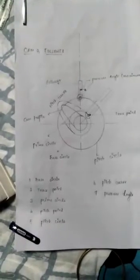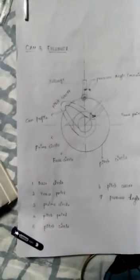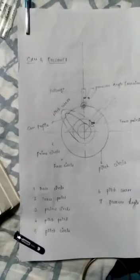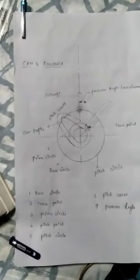And then the fourth one is pitch point. Pitch point is the point on the pitch curve at which pressure angle is maximum.